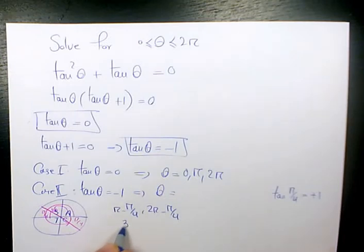So pi minus pi over 4 is going to be 3 pi over 4 and 2 pi minus pi over 4 is going to be 7 pi over 4. So we have 0, 3 pi over 4,